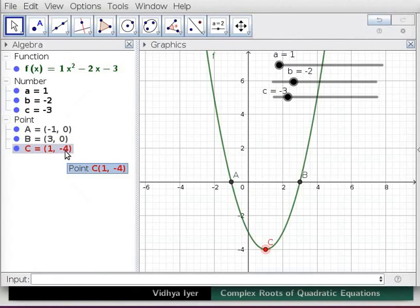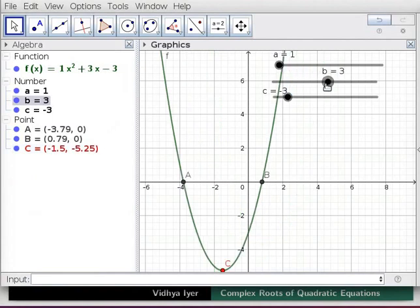Click on move tool, set slider a at 1, slider b at 5,